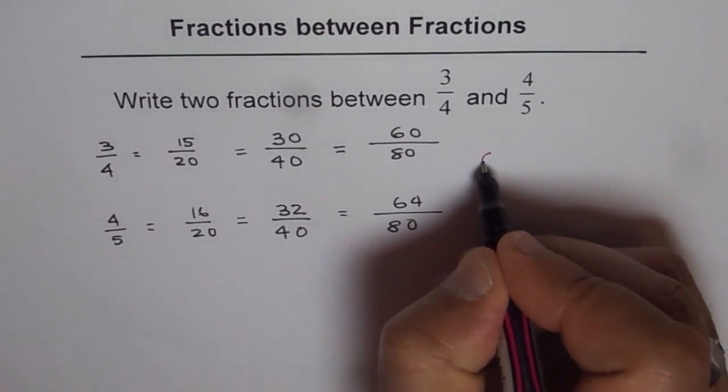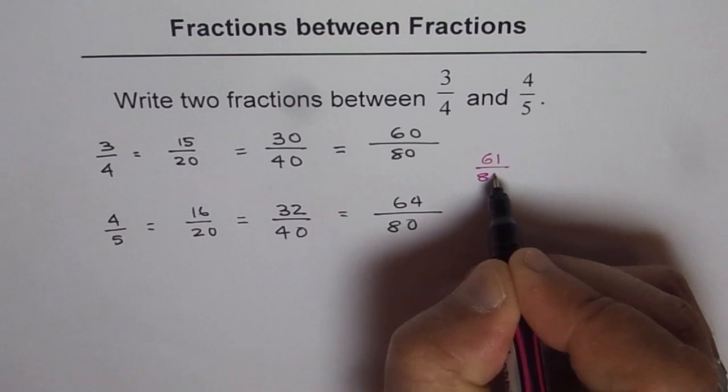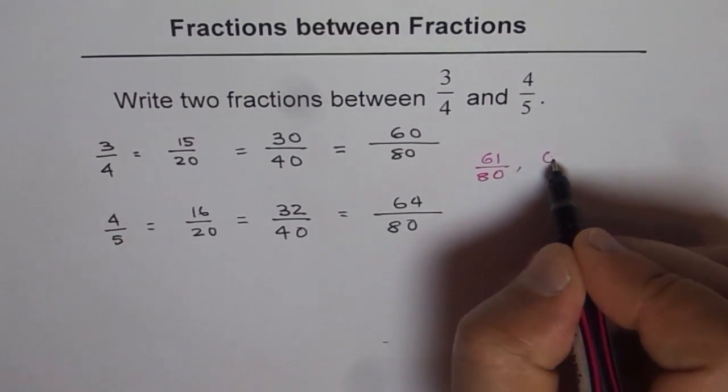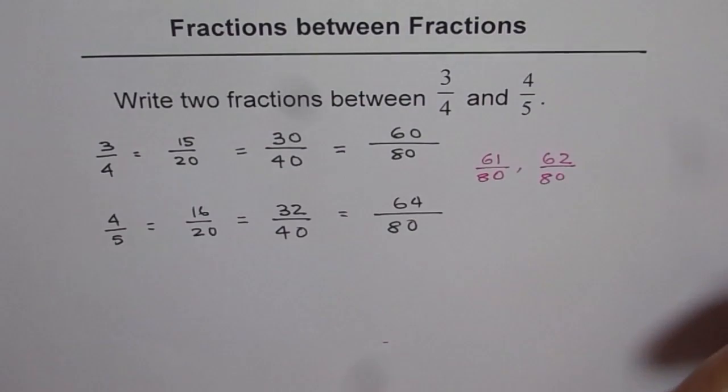Now we can write down a couple of fractions between these two. One will be 61/80. Then we could write 62/80. Like this, we can write fractions between any two fractions.